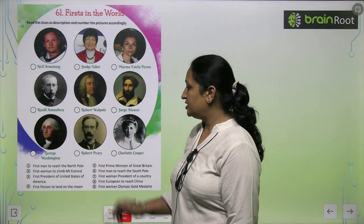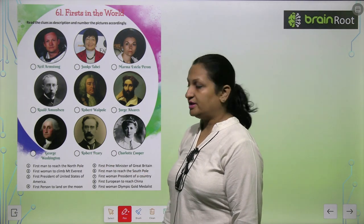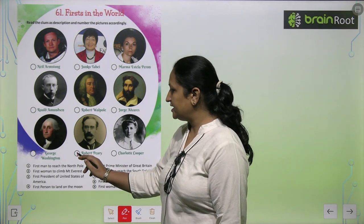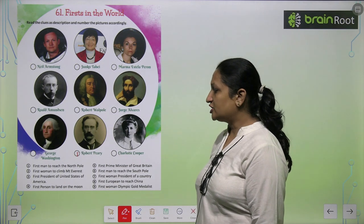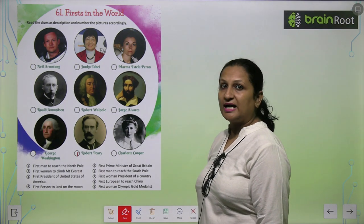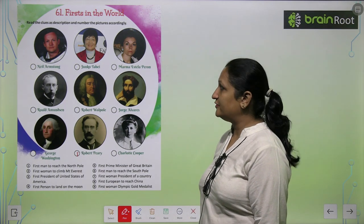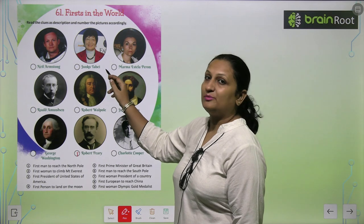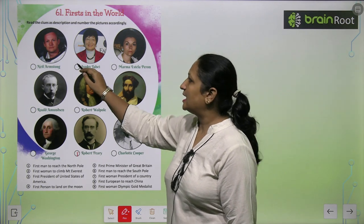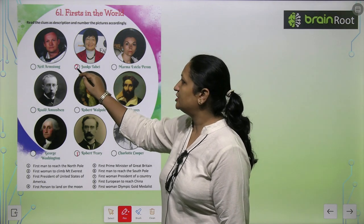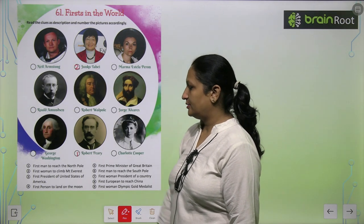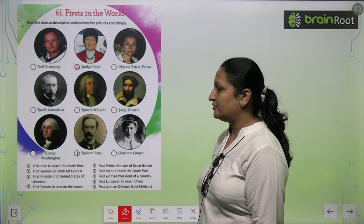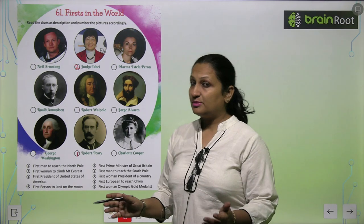He was Robert Peary. So you will write here number 1. First woman to climb Mount Everest — that was Junko Tabei. So aap yaha pe number 2 likhenge. First President of United States of America — ye toh sabhi ko pata hai, kaun thay wo?